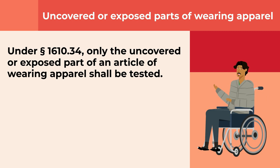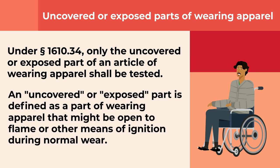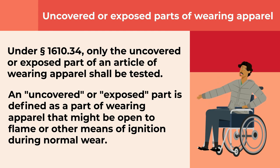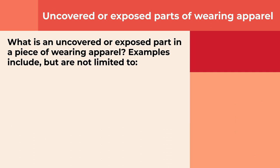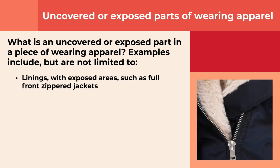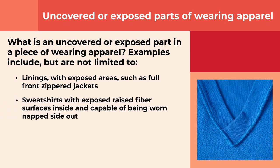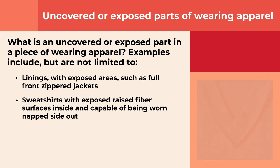Only uncovered or exposed parts of wearing apparel shall be tested under the standard. An uncovered or exposed part is defined as a part of wearing apparel that might be open to flame or other means of ignition during normal wear. The outer surface of an undergarment is considered to be uncovered or exposed. Examples include linings with exposed areas such as full front zippered jackets, sweatshirts with exposed raised fiber surfaces on the inside capable of being worn napped side out, unlined hoods, and rolled cuffs.